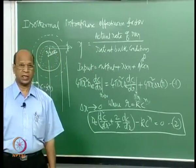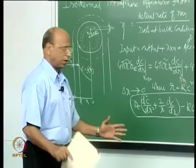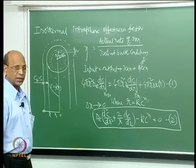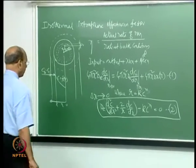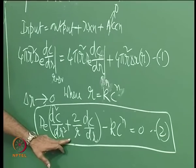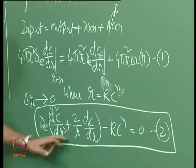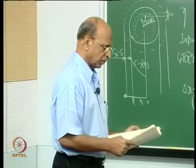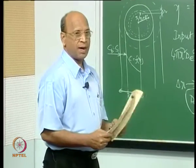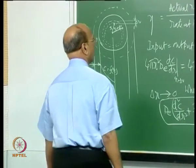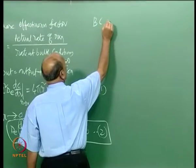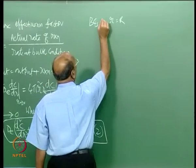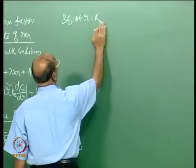Using the concentration profile you find the actual rate; the rate at bulk conditions you already know. The procedure is universal. This is a second-order differential equation, so you need two boundary conditions. At r = capital R: C = C_s = C_b, since there is no film resistance.